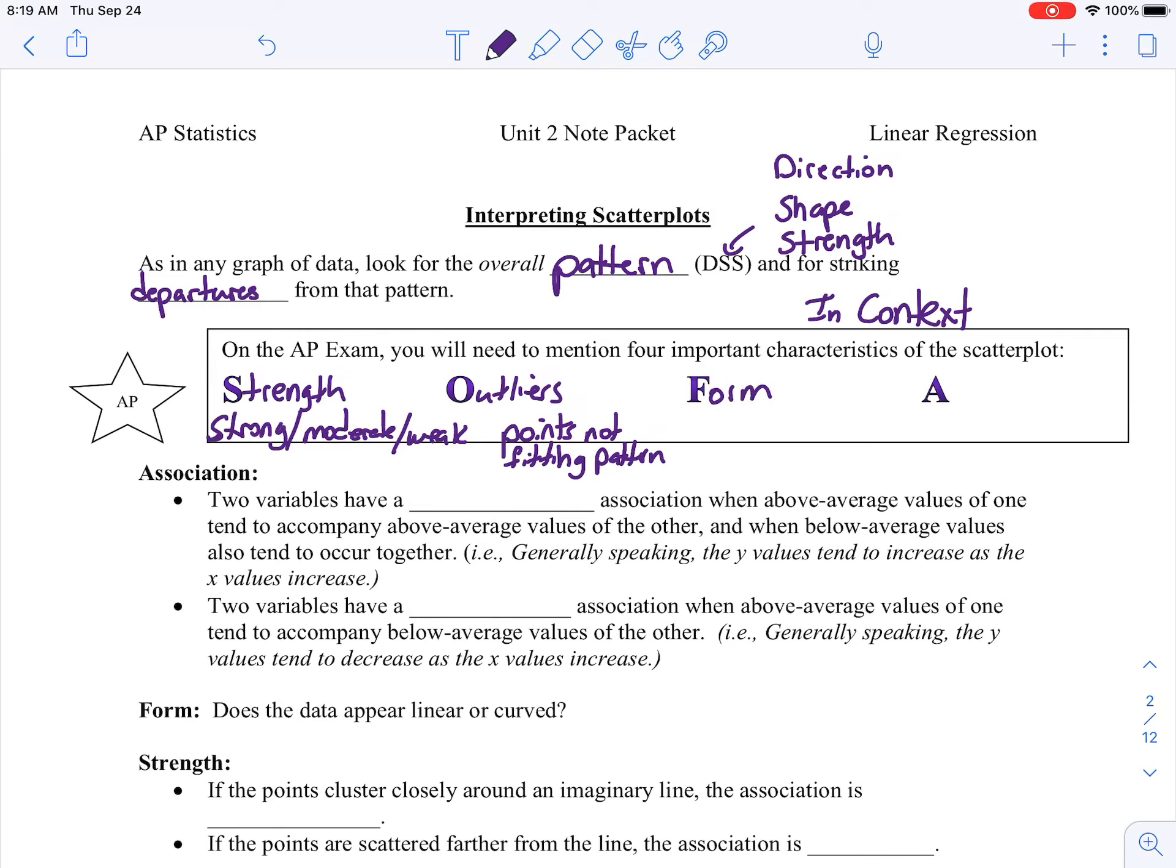F is going to stand for form. Typically we only have two to choose from. It's going to be linear or curved. And this is going to be the association direction. And typically we have positive, negative, or none.